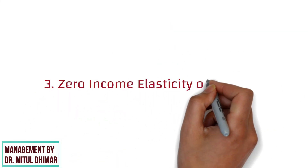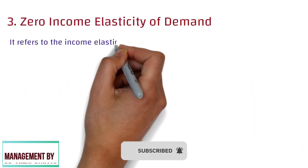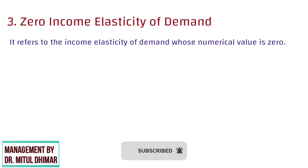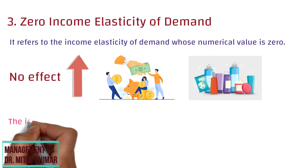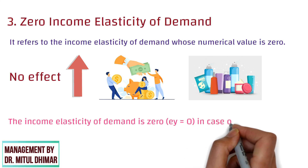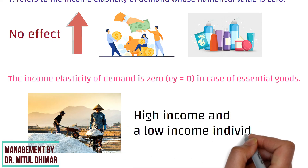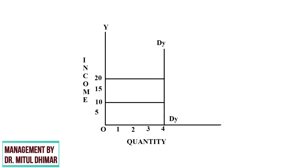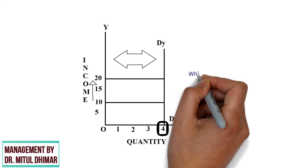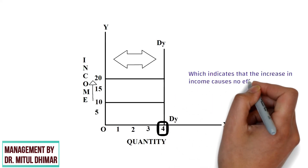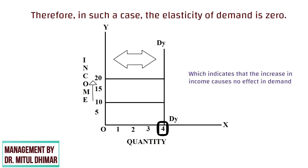The third type is zero income elasticity of demand. It refers to income elasticity of demand whose numerical value is 0, because there is no effect of increase in consumers' income on the demand of the product. The income elasticity of demand is 0 in case of essential goods. For example, salt is demanded in the same quantity by a high-income and a low-income individual. This figure shows that when income increases from Rs 10 to Rs 20, the demand for goods remains the same at 4 units. The slope of the curve is parallel to the y-axis, which is the income side, indicating that the increase in income causes no effect in demand. Therefore, in such a case, the elasticity of demand is 0.